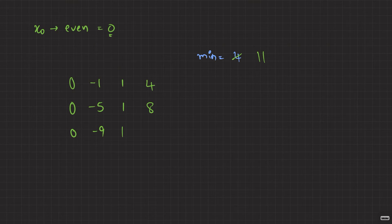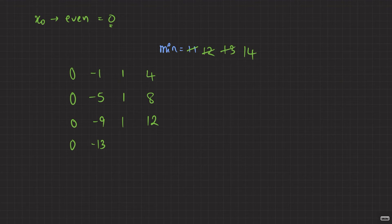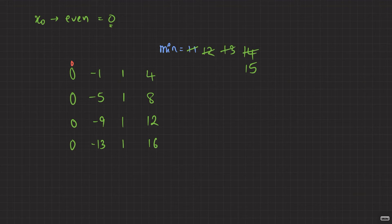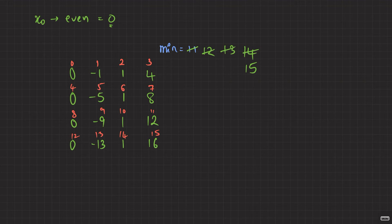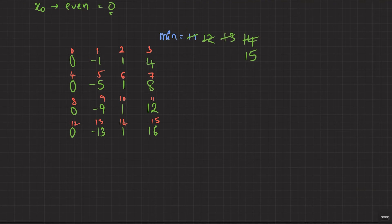After ten minutes we're at one. Eleventh minute: one is odd so one plus eleven equals twelve. Twelfth minute: twelve is even so twelve minus twelve equals zero. Thirteenth minute: zero is even so minus thirteen. Fourteenth minute: minus thirteen is odd so minus thirteen plus fourteen equals one. Fifteenth minute: one is odd so one plus fifteen equals sixteen. So let me write down the positions after each minute from 0 to 15.